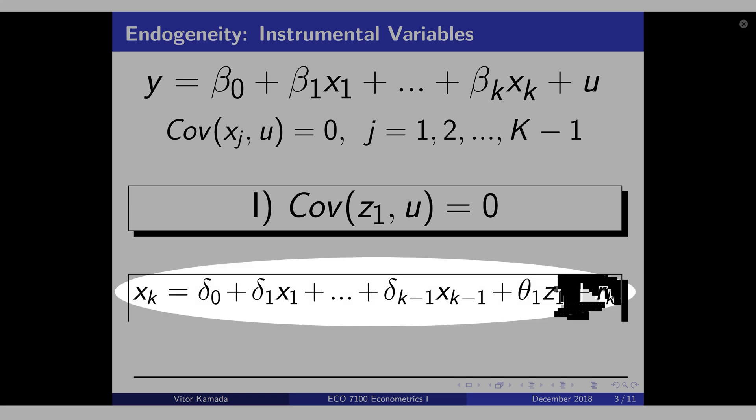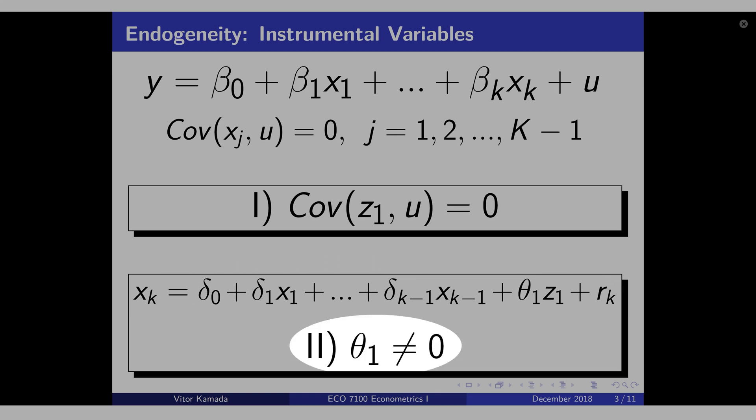That means, if you run this regression here, the theta 1 has to be different than zero. And we formally write this second assumption.